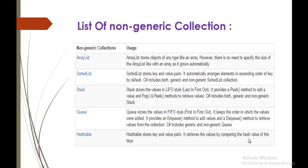ArrayList can store any values whether integer, string, float, or double. There is no need to specify the size of an ArrayList — that is the second advantage. The size grows automatically whenever you add values to it. But for a regular Array, you must specify the size at the start. With ArrayList, the size grows automatically when you add items.